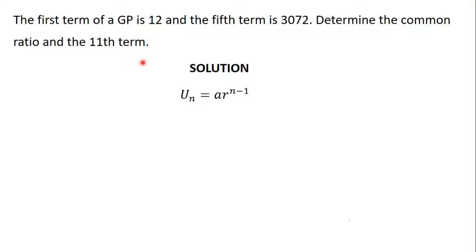We have learnt that the value of a term in a GP is denoted by uₙ, and uₙ is given by the formula a·rⁿ⁻¹, where a is the first term of the GP, r is the common ratio, and n is the number of the term whose value we want to find.